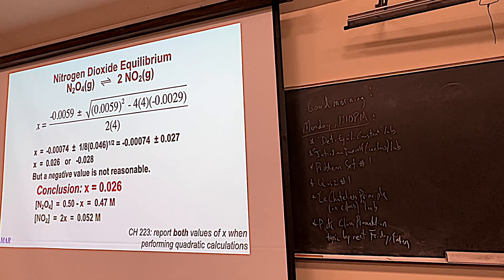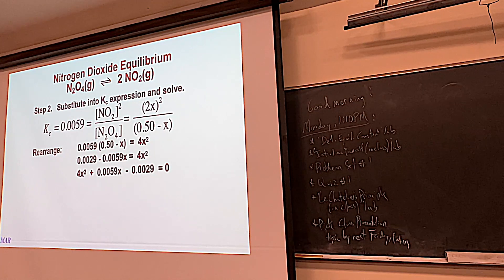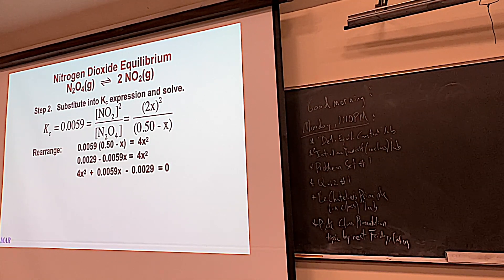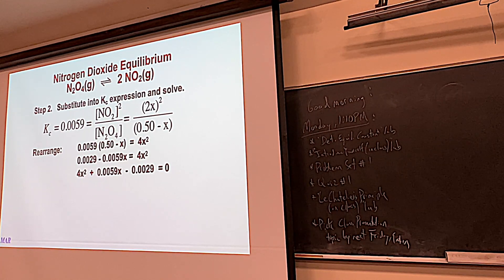When do you use the square root trick vs. the quadratic? In the first problem, both the top (2x)² and the bottom (1−x)² were perfect squares, so you could take the square root of both sides. In the N2O4 problem, the denominator (0.50 − x) is not squared, so that trick doesn't work — you need the quadratic or the solve button. Use the shortcut when it's applicable, otherwise go to the quadratic.